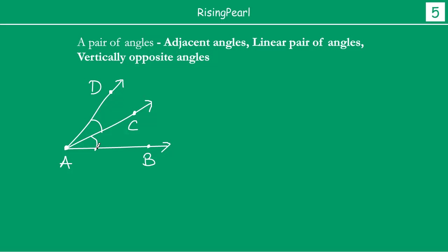So for this angle, your arms are AC and AB. And for this angle, your arms are AD and AC. So the common arm is AC, and you have a common vertex A. So angle CAB and angle DAC — these two angles are called adjacent angles. The word adjacent means next to each other.